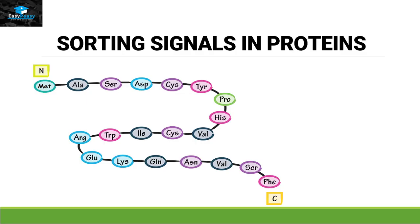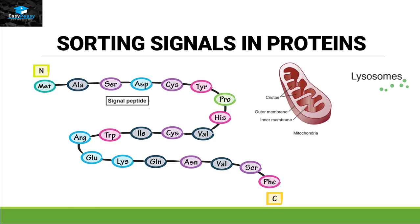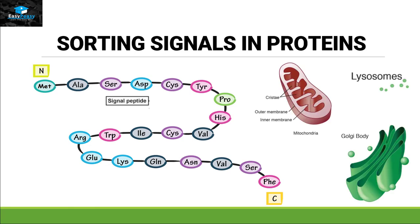For each protein to enter a specific organelle, it has a specific type of signal, and that signal is called a signal peptide. Around 15 to 30 amino acids of that polypeptide chain basically determine whether this protein needs to enter the mitochondria, lysosome, or Golgi bodies. This specific sequence recognizes which proteins belong to which compartment.